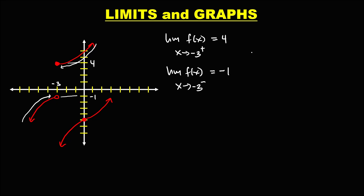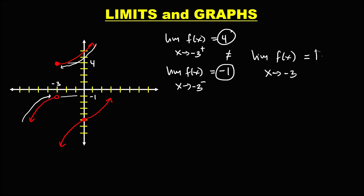To find the limit of f(x) as x approaches negative 3: since the right side limit is not equal to the left side limit, therefore this limit does not exist.